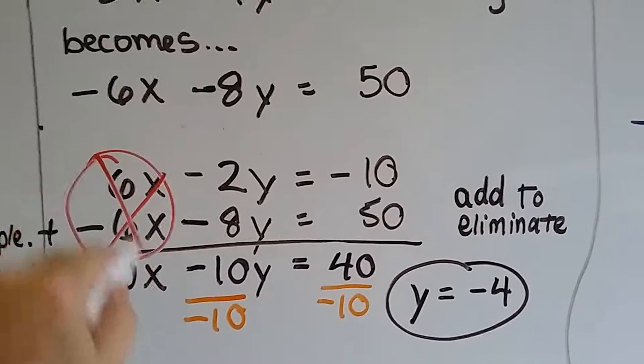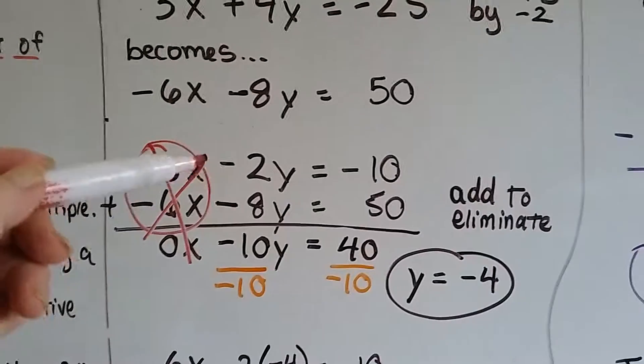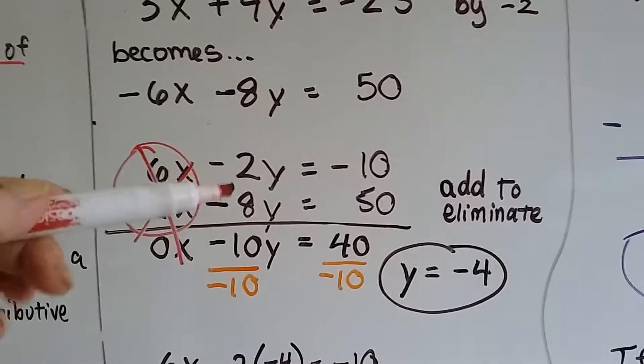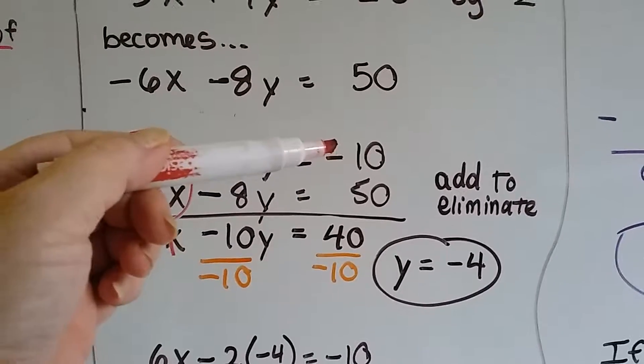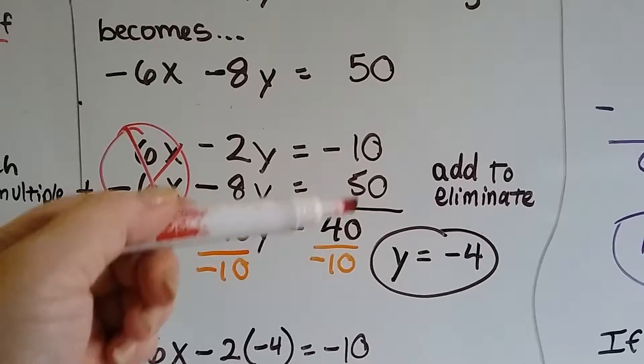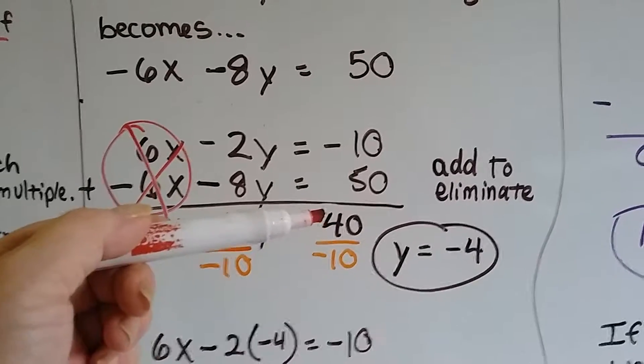Now we've got negative 2 added to negative 8, that gives us negative 10. If you have negative 10 and add 50 to it, that brings you up out of zero to a positive 40.